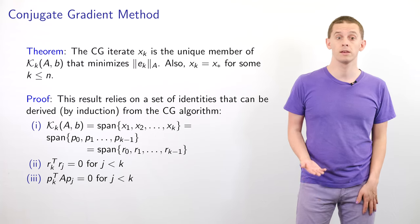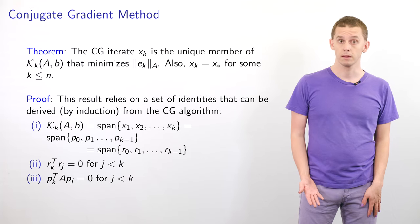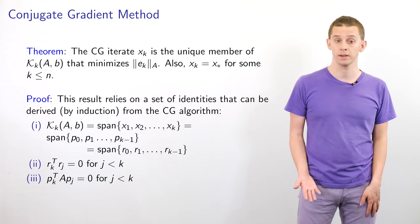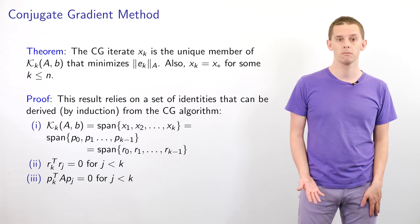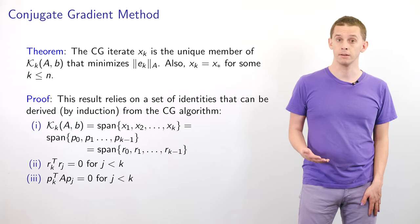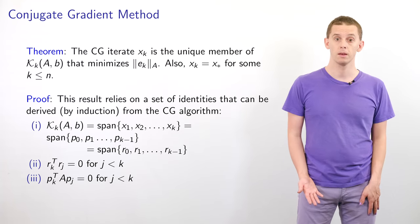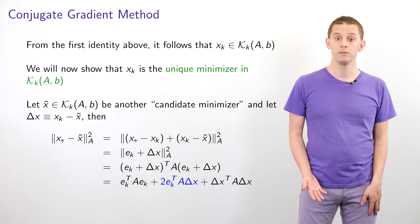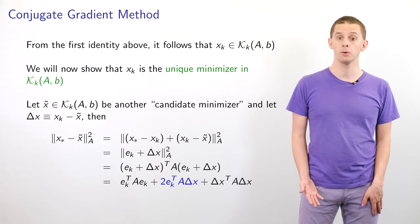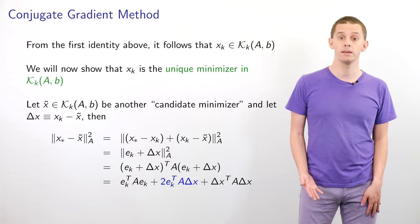The first identity is that K_k(A,b) equals the span of the vectors x_1 to x_k, which also equals the span of p_0 to p_{k-1}, and also equals the span of r_0 to r_{k-1}. The second identity is that r_k^T r_j = 0 for j < k. The third identity is that p_k^T A p_j = 0 for j < k. From the first identity it follows that x_k is in the Krylov subspace K_k(A,b).